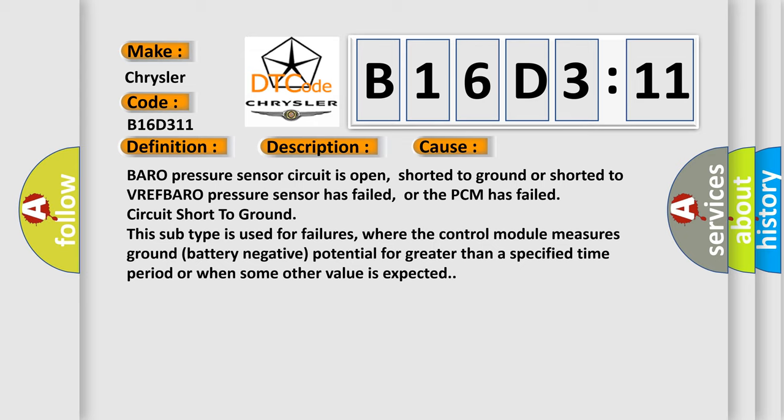Circuit short to ground. This subtype is used for failures where the control module measures ground battery negative potential for greater than a specified time period or when some other value is expected.